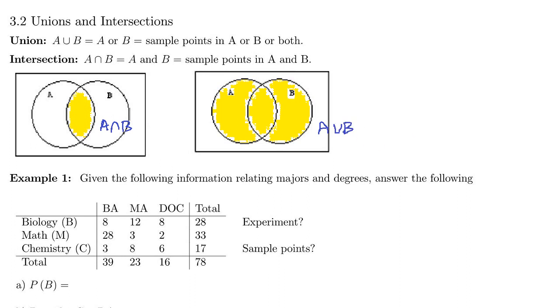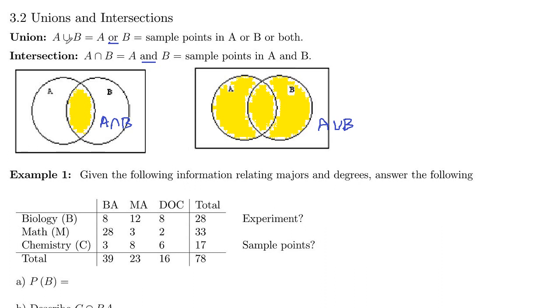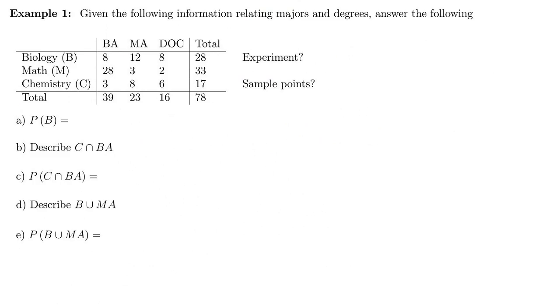So let's look at an example using unions and intersections. Keywords there are AND for intersection, OR for union. In this example, we've got some information relating majors and degrees. We want to answer the following. So this eight right here, we had sampled, surveyed 78 people total. This eight is saying that biology majors who got a BA, there were eight of those. So our experiment here would be to conduct the survey.